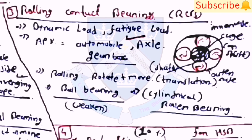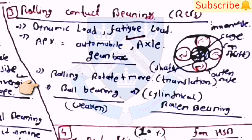Rolling contact bearing: dynamic load or fatigue load is applied. Applications: automobiles, axles, gearboxes. In the rolling process, rotation plus movement is there. Ball bearing is weaker than cylindrical bearing or roller bearing.